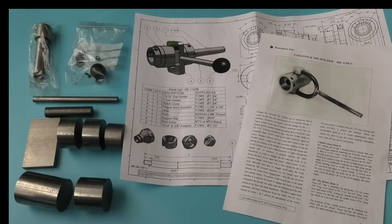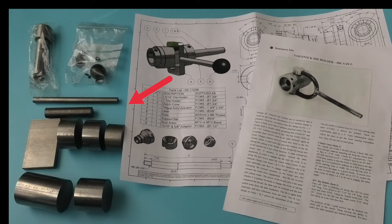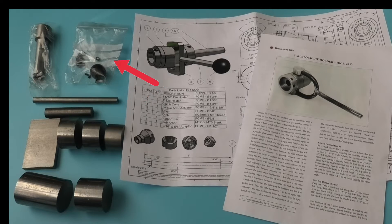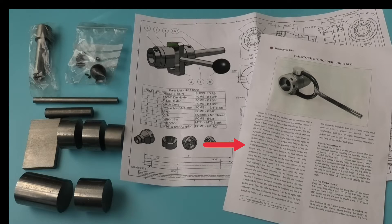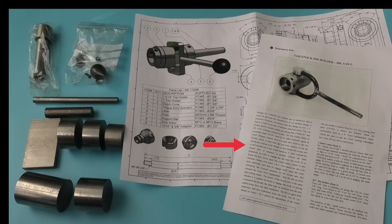This is what you get in the kit: a set of steel blanks, a number two morse taper, and a set of screws for the project. And on the right you have the drawings and a detailed list on how to machine the parts.